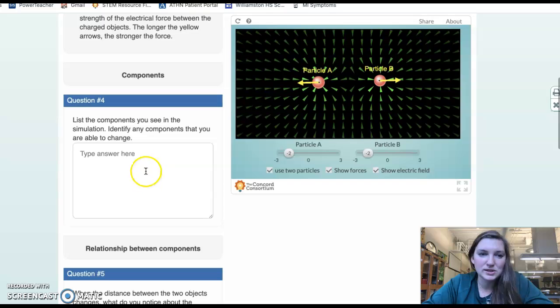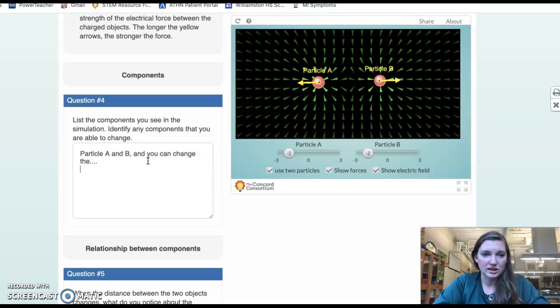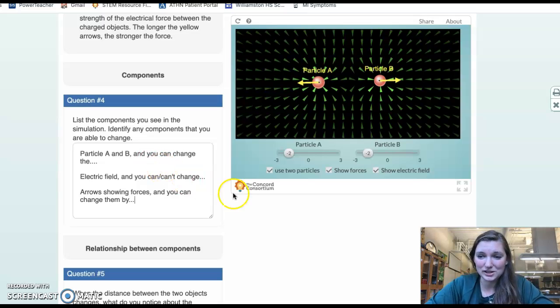So how are we going to answer these questions? So list the components that you see in the situation. Identify any components that you are able to change. Components mean like the parts that are here. So we have particle A and B, and you can change the what on them. We have the electric field, and can you change anything on that? You can, can't change... is a good place to start there. Okay, and then we have the forces, arrows showing forces, and you can change them by... Okay, so that's a good thing to get you started there.